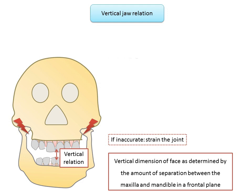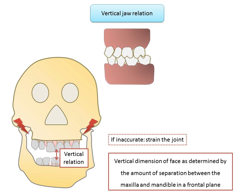There are a few terms we need to understand before going into detail about vertical jaw relation: vertical dimension of occlusion (VDO) and vertical dimension at rest (VDR), and freeway space. Vertical dimension of occlusion is the length of the face when the teeth, occlusal rims, central bearing points, or any other stop are in contact and the mandible is in centric relation. VDO is a constant point and can be maintained for an indefinite time.